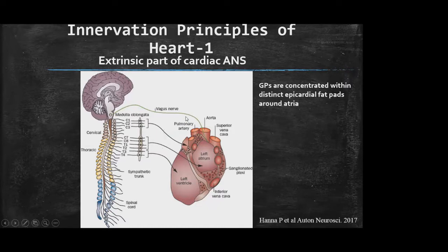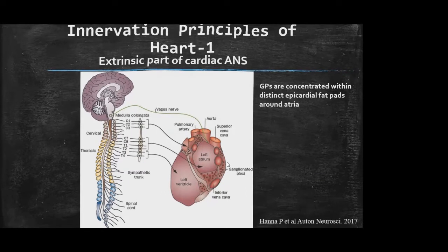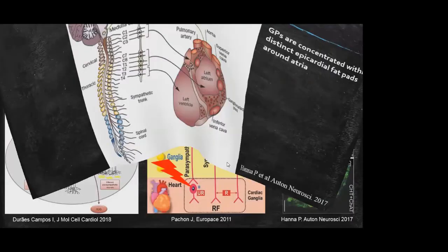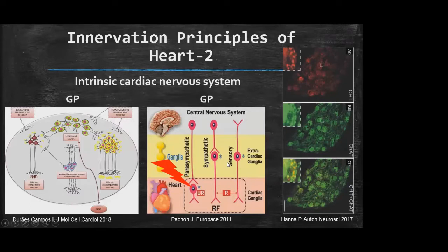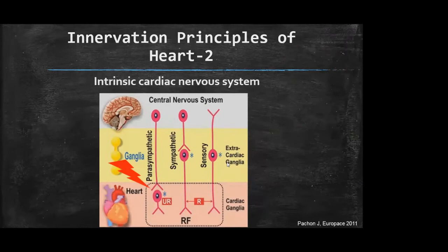In the parasympathetic system, the great majority of postganglionic neuronal bodies are located in ganglionated plexus sites, concentrated within distinct epicardial fat areas. The intrinsic part consists of ganglionated plexus sites. Pachon et al. stated that within a ganglionated plexus site, we see neuronal bodies of the parasympathetic system and axonal fibers of sympathetic and sensory systems.